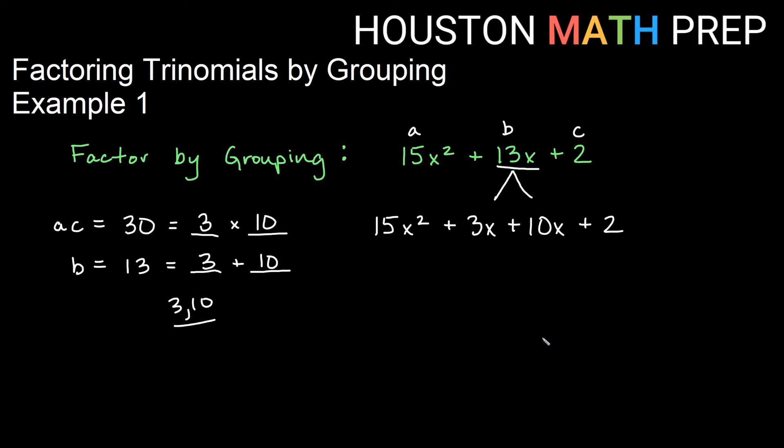Once we are here, you can then follow the procedure that we followed in our intro video to factoring by grouping. We now look at the first pair of terms and we say what is the greatest common factor of the first pair. We can pull out 3x from the first pair of terms. Leftover in the first term would be both a 5 and an x to get 15x². 3x times what will give us 3x? Answer is plus 1.